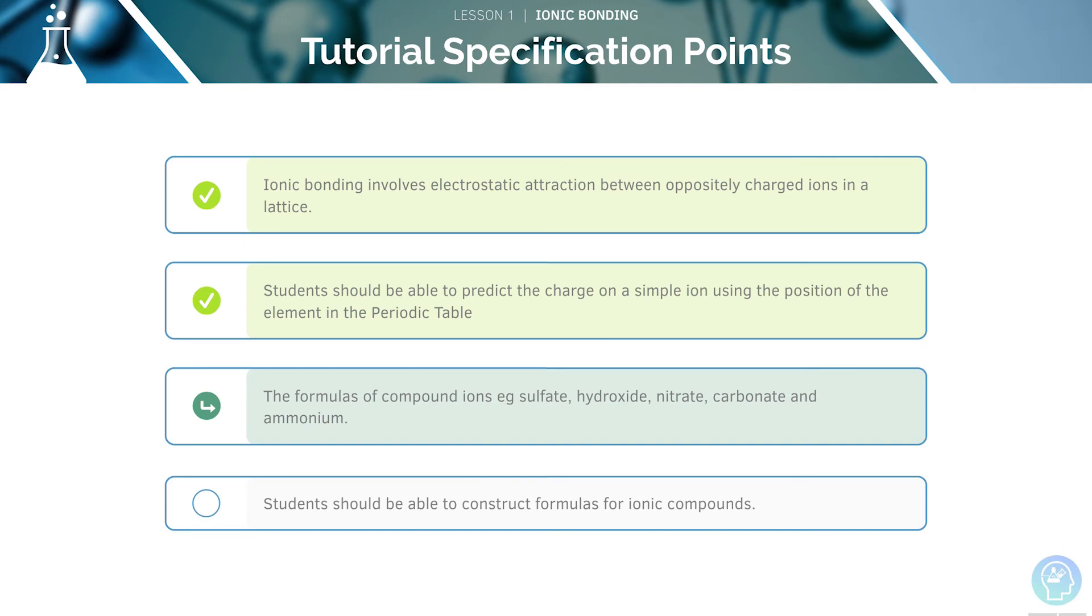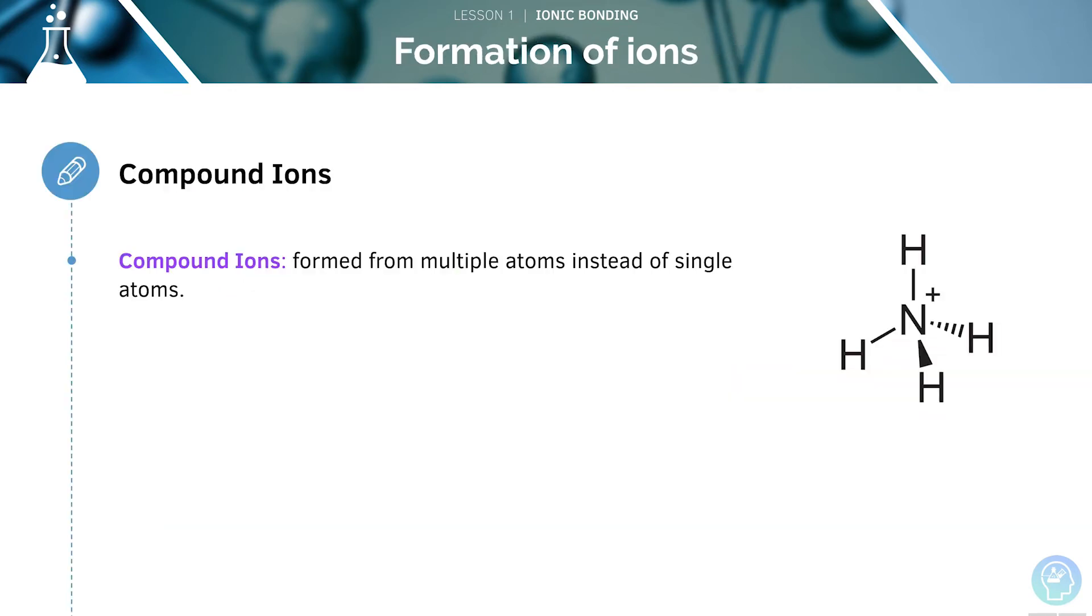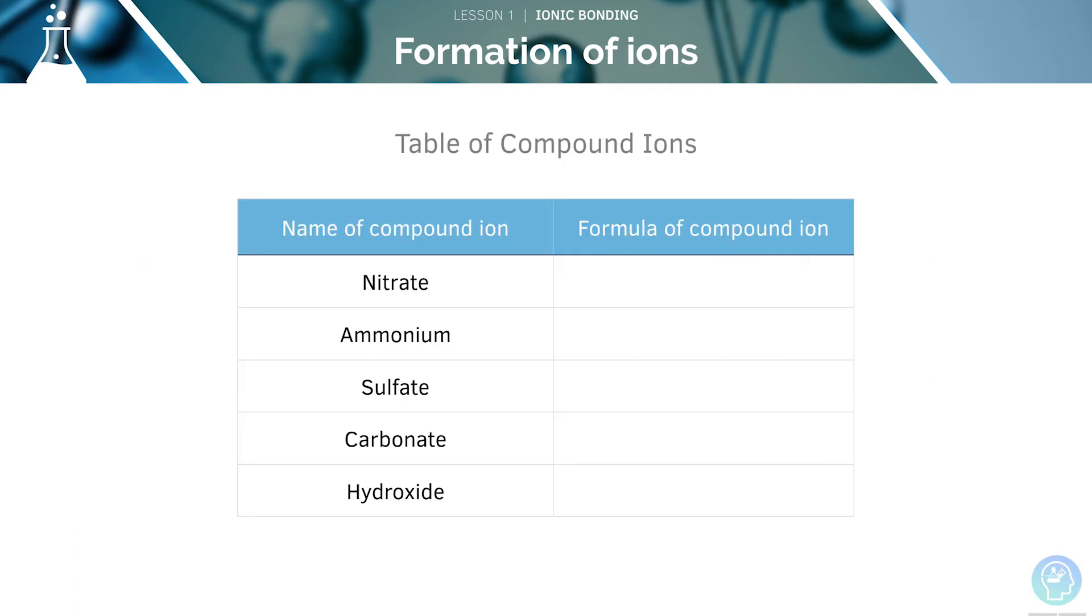Our next specification point covers the formulae of compound ions. A compound ion is formed from multiple atoms instead of single atoms. Have a go at filling in the formula and the charges of the following ions. The answers will be on the next slide. AQA exams want you to learn the formulae shown in this table. Make sure that you know them off by heart as they won't be given to you in an exam question.